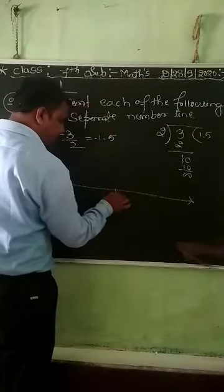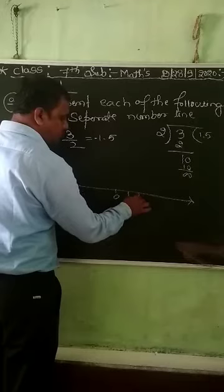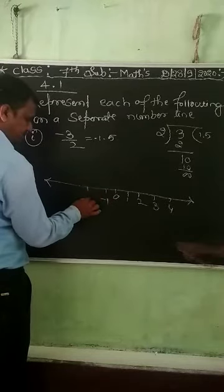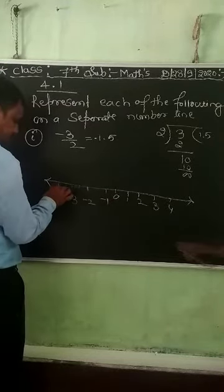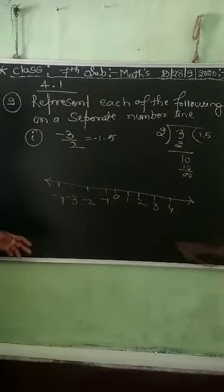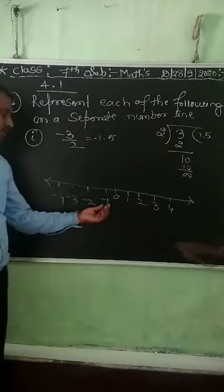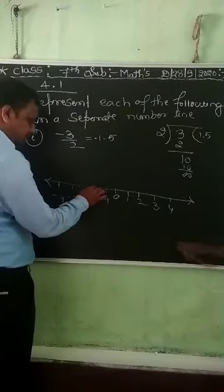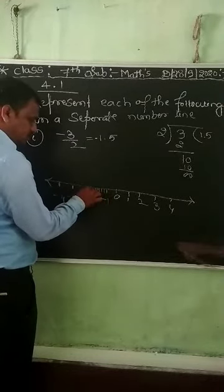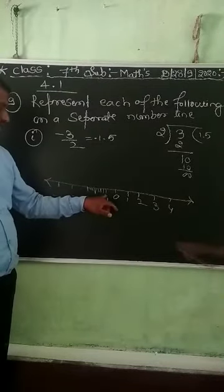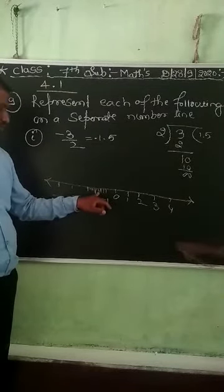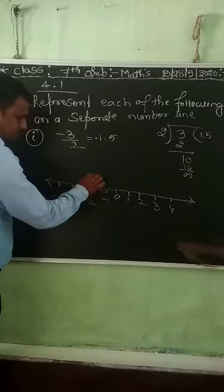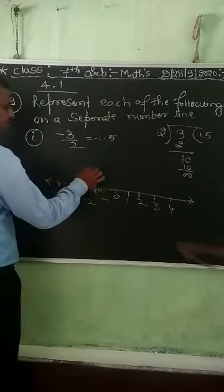The center point is zero. On the right side there are positive numbers and on the left side negative numbers. Since we need minus 1.5, we go to the left side: minus 1, minus 1.1, minus 1.2, minus 1.3, minus 1.4, and this point is minus 1.5.